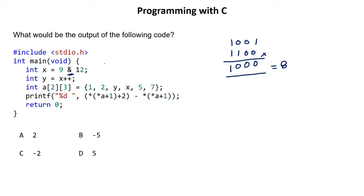The result of 9 AND 12 is 1000 in binary, which is equivalent to 8. So the value of X becomes 8. Now Y is assigned the value of X using post-increment (X++). Since it's post-increment, the current value of X (which is 8) gets assigned to Y first, so Y becomes 8.